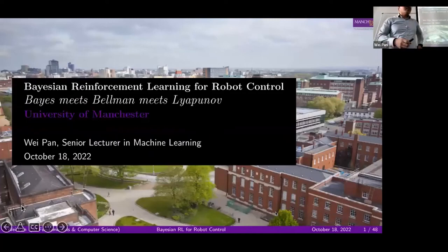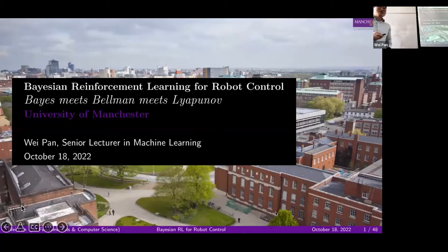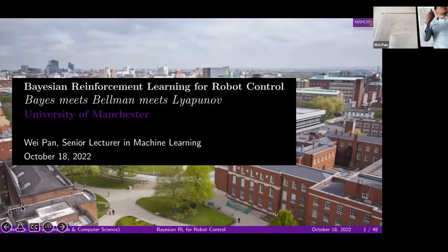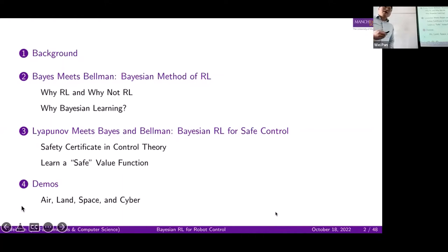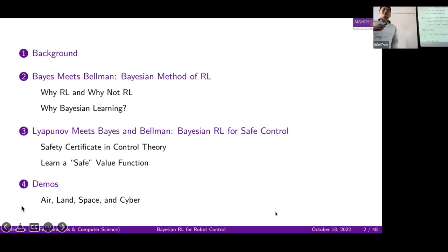Good afternoon everyone. Today we're going to talk about Bayesian reinforcement learning for robot control. Bayes is for Bayesian, born in the 17th century — about 300 years ago. Bellman is for reinforcement learning, born in 1920 in the US. And Lyapunov is for control, born around the 18th century in the Russian empire. Basically today I'm going to use 300 years of knowledge from three different countries for robotics. First I'll give an introduction about myself and my research, then I'll cover Bayesian reinforcement learning with Bayes and Bellman, then introduce the third person — Lyapunov — for safety in robot control, and finally show demos from air, space, and cyber applications.